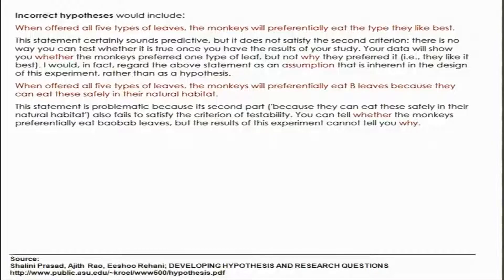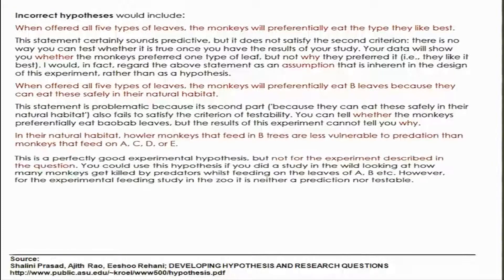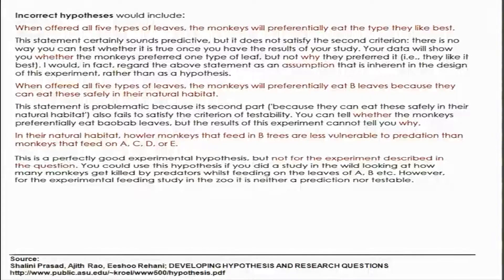The second incorrect hypothesis: when offered all types of leaves, the monkeys will preferentially eat B leaves because they can eat these safely in their natural habitat. You cannot test this because the monkeys are caged in the zoo. The third incorrect hypothesis: in their natural habitat, monkeys that feed on B trees are less vulnerable to predation than monkeys that feed on A, C, D, or E. This is a perfectly good experimental hypothesis, but not for the experiment described, because you are in the zoo with captive monkeys and cannot test predation.